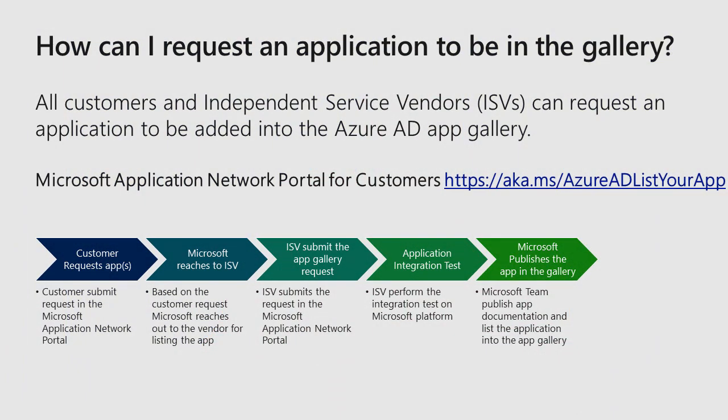This workflow is available for all customers and independent software vendors so they can request an application to be added to the App Gallery. We use the Microsoft Application Network Portal for this. Customers can log in to the portal and submit a request for an app to be added. Based on that request, the Microsoft team will reach out to the vendor and start a conversation about the value of adding the application to the gallery. Once the ISV submits integration details in the portal, the Microsoft team and vendor team configure and test the integration. After testing, Microsoft publishes the documentation and makes the app available in the gallery.